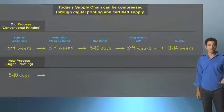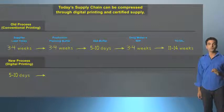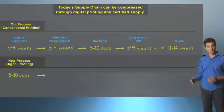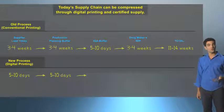And with NASCO's high level of on-time delivery, you can reduce the production planning buffer from three to four weeks down to just one.